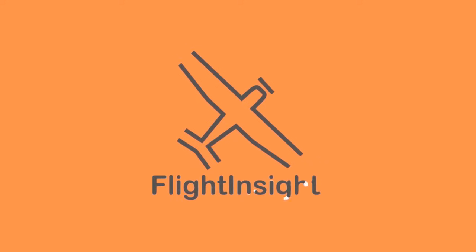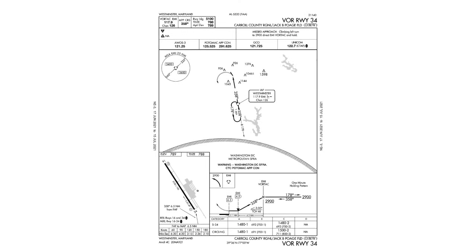If this is one of the first times you've been looking at an instrument approach procedure chart, you might be confused about all the elements on there. So let's have a look at the basics of an instrument approach procedure chart. This is the VOR for runway 34 at Carroll County Airport in Maryland — a relatively simple approach plate, but a good jumping off point to look at all the basics.